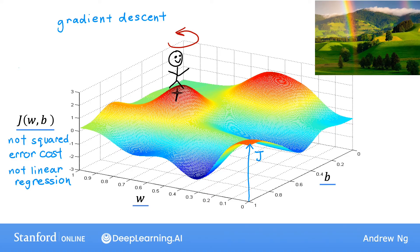If you want to walk down this hill as efficiently as possible, it turns out that if you're standing at this point in the hill and you look around, the best direction to take your next step downhill is roughly that direction. Mathematically, this is the direction of steepest descent. It means that when you take a tiny baby little step, this takes you downhill faster than a tiny little baby step you could have taken in any other direction.